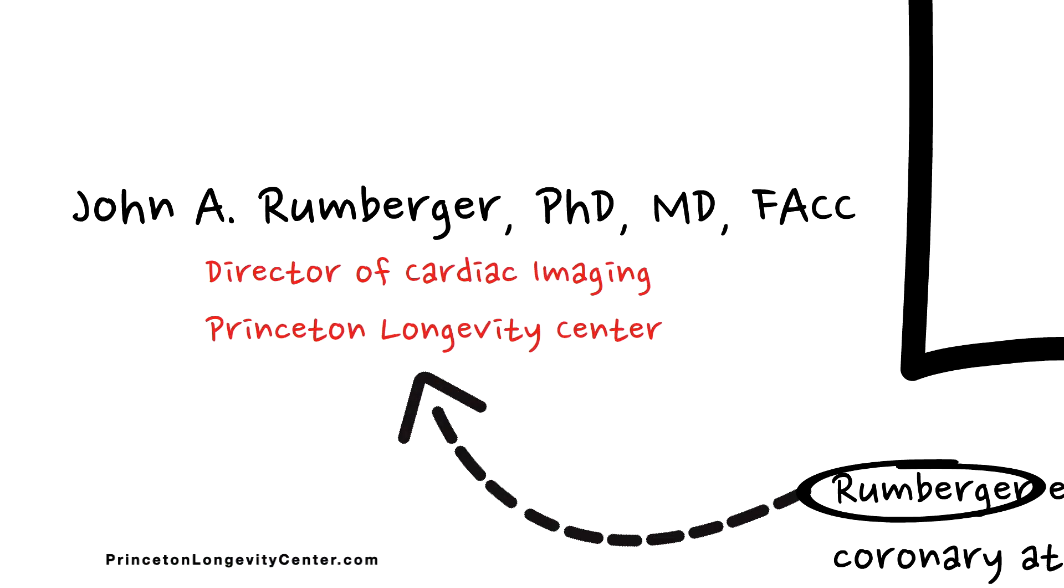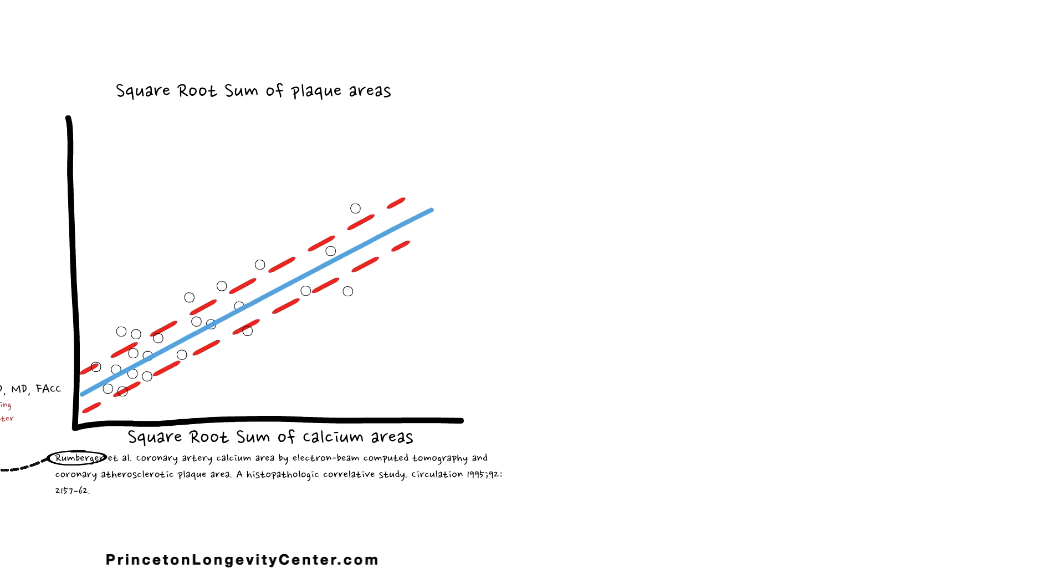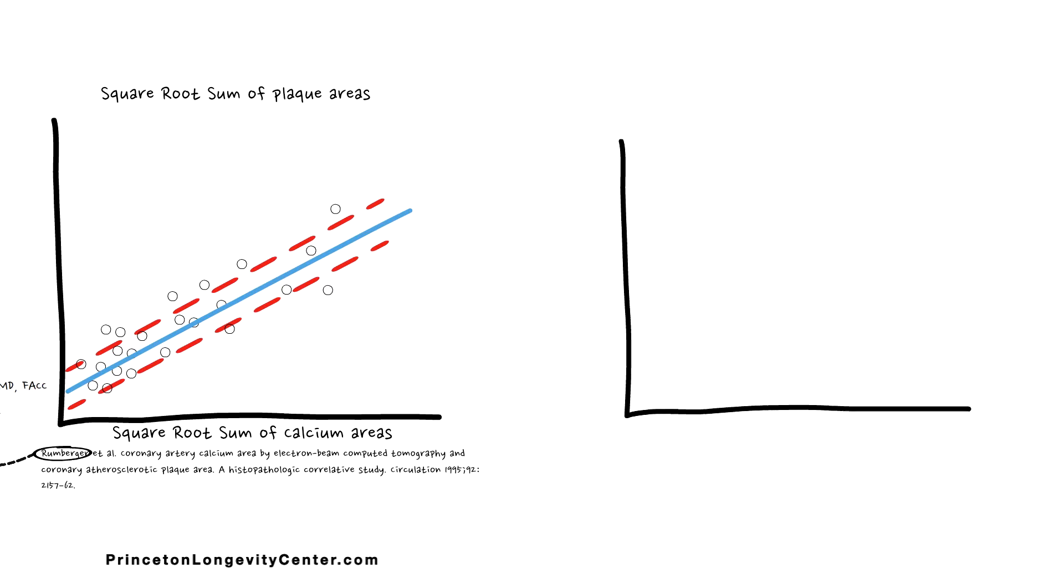Basically, the more calcium you have in your arteries, the more plaque you have. We also know that the higher the calcium score, the higher the risk of plaque rupture and actually having a heart attack.